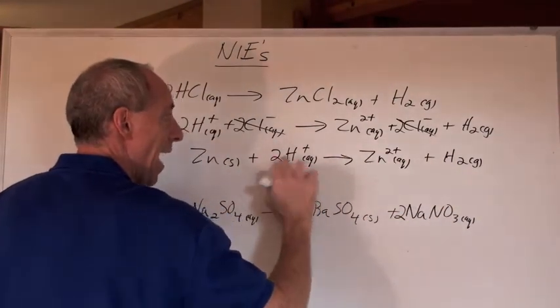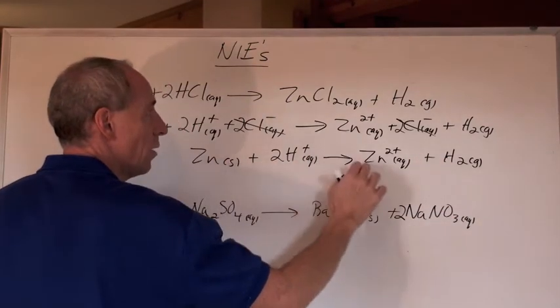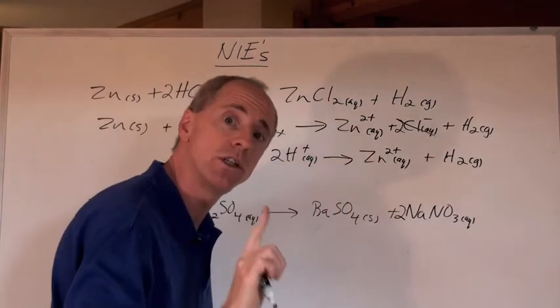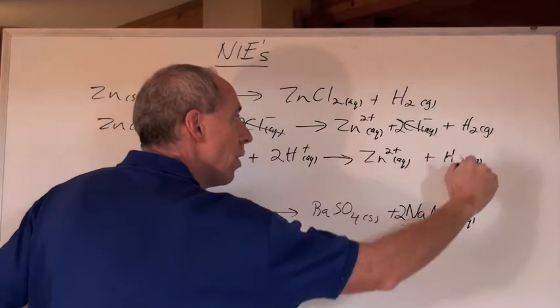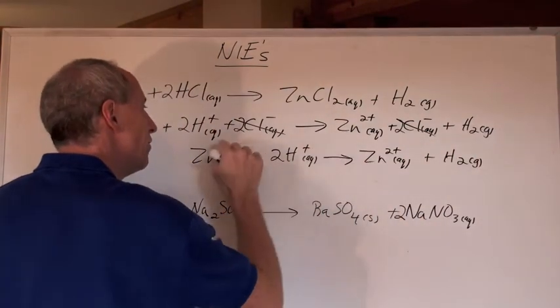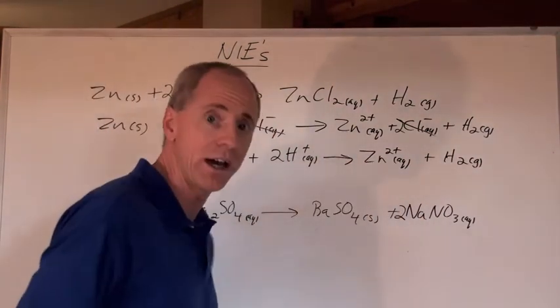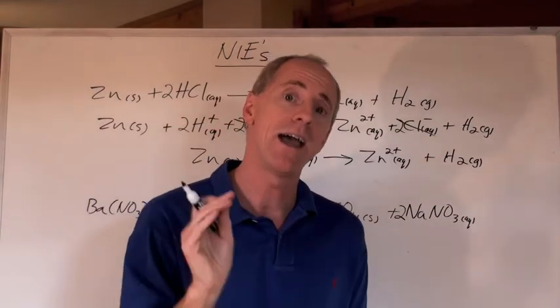Now, this is called the net ionic equation. Balanced perfectly in terms of atoms, two H's, two H's, one Zn, one Zn, and total charge. Two positive and zero here, make it two positive on this side. Two positive and zero here, make it two positive on this side. Got to balance atomically and electrically.